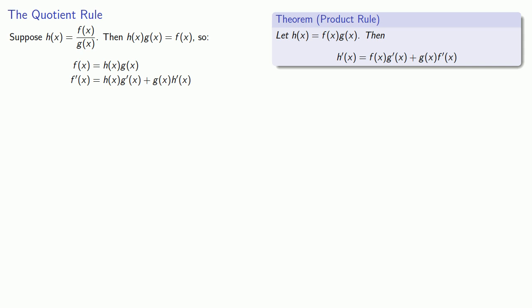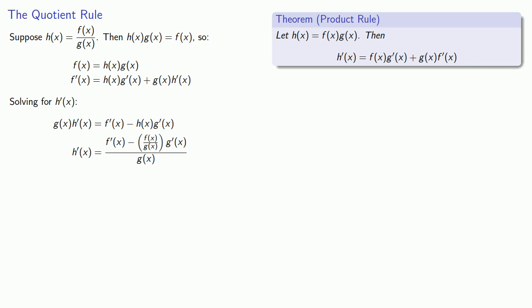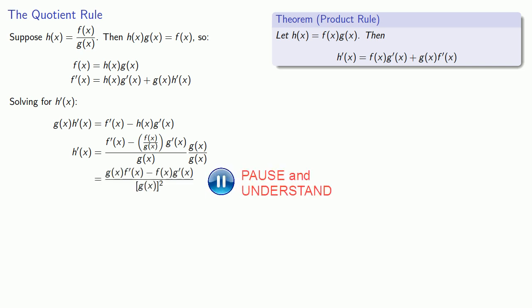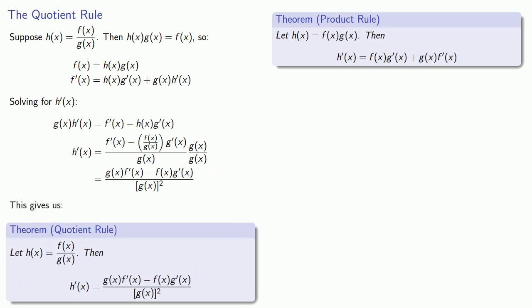Now we want to find the derivative of h of x, so we'll solve for it. While this messy expression is perfectly reasonable as a derivative, let's clean it up a little bit. This is a compound fraction, so let's multiply through by the denominator g of x. After all the dust settles, we get a nice expression for the derivative — this gives us the quotient rule. If my function is a quotient, then the derivative is the denominator times the derivative of the numerator, minus the numerator times the derivative of the denominator, all over the square of the denominator.